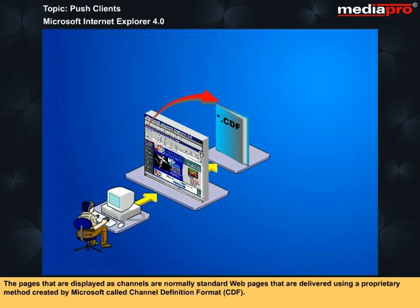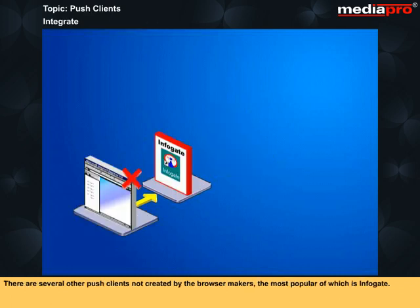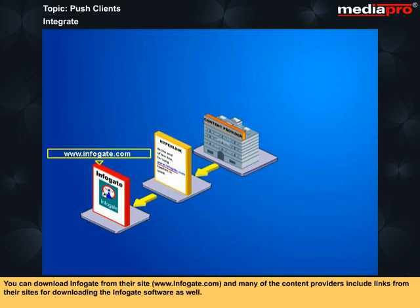The pages displayed as channels are normally standard web pages delivered using a proprietary method created by Microsoft called Channel Definition Format, or CDF. Microsoft has submitted CDF as a standard for all push technology on the internet, but this is still under discussion. There are several other push clients not created by the browser makers, the most popular of which is InfoGate. Because InfoGate is so popular, it is able to get many of the top content providers to be channels for their network. You can download InfoGate from their site, www.infogate.com, and many content providers include links from their sites for downloading the InfoGate software as well.